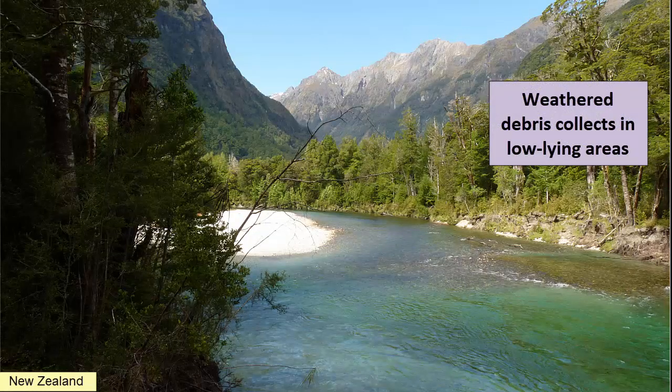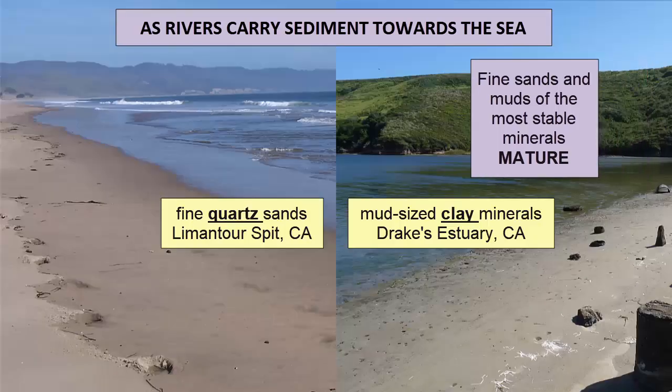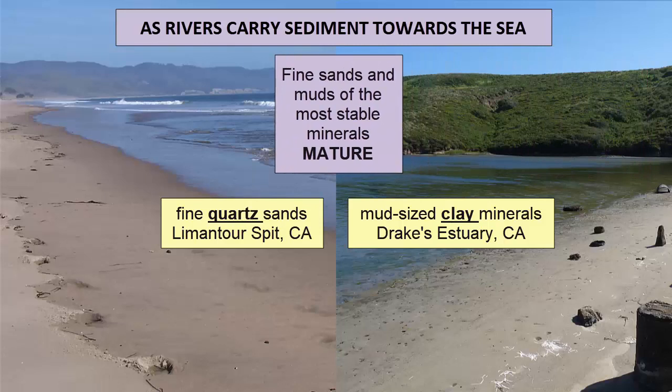Once rocks have weathered, the weathered pieces can collect on Earth's surface in low-lying areas. They can get picked up by the erosional agents of running water, glaciers, wind, gravity, or humans, and moved along to a new surface where they settle out. During the process of movement, the pieces will continue to break down chemically and physically, such that after many hundreds of years and many hundreds of kilometers from their place of origin, what's primarily left are the finest sands and muds made of the most resistant material. The two most abundant minerals found in these long-traveled mature sediment piles are quartz and clay.